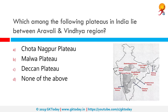Which among the following plateaus in India lies between the Ara Valley and the Vindhya Range? The correct answer is Malwa Plateau. Malwa is a historical region of west-central India occupying a plateau of volcanic origin. Geologically, the Malwa Plateau generally refers to the volcanic upland north of the Vindhya Range.